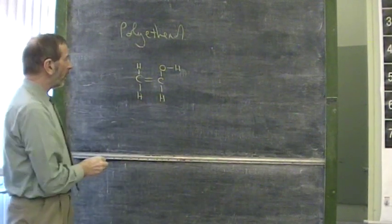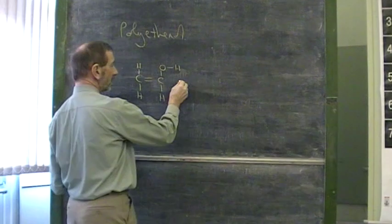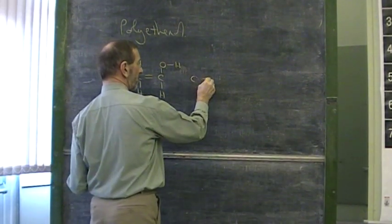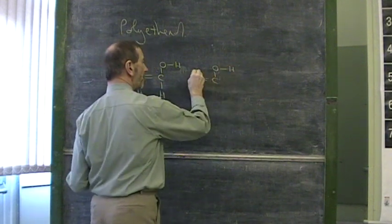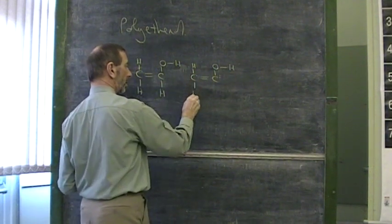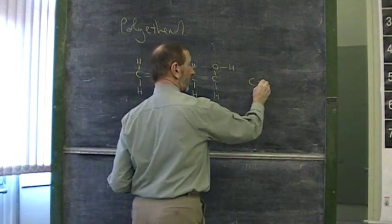When this monomer polymerizes, we get a polymer which looks something like this. Let's put in one or two other monomers. There we are. One more monomer.